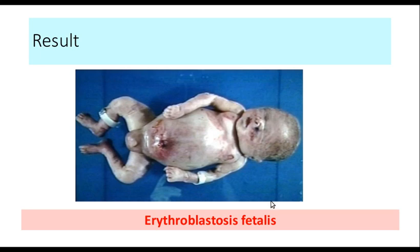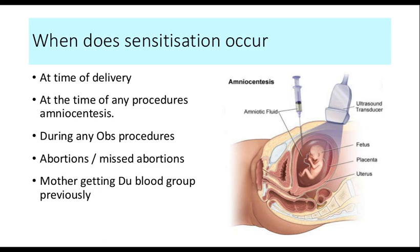A milder form may result in severe jaundice at the time of birth. Sensitization most commonly occurs at the time of delivery. Nowadays, procedures like amniocentesis — where a needle is inserted through the uterus to collect fetal material — can also cause sensitization. Any obstetric procedure during pregnancy carries this risk. Additionally, a mother who previously received Rh Du-positive blood may also have been sensitized.